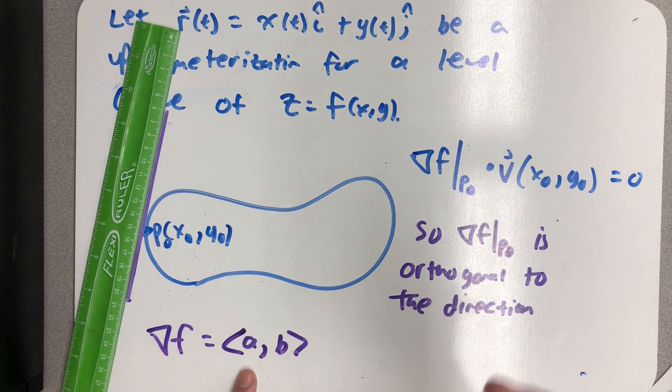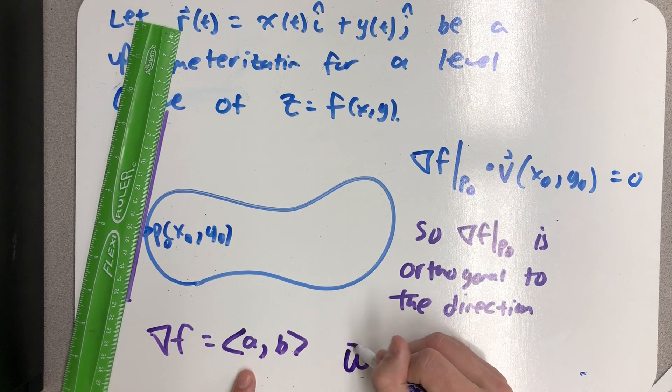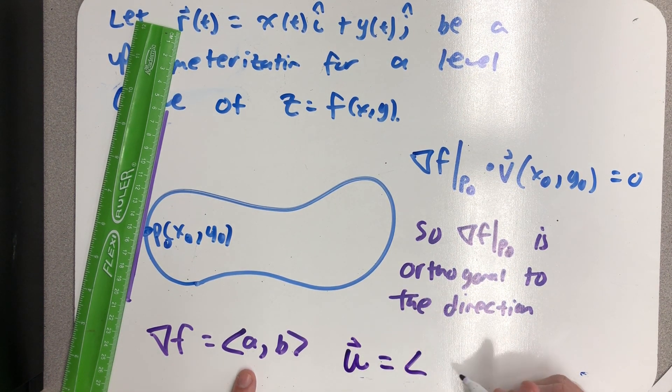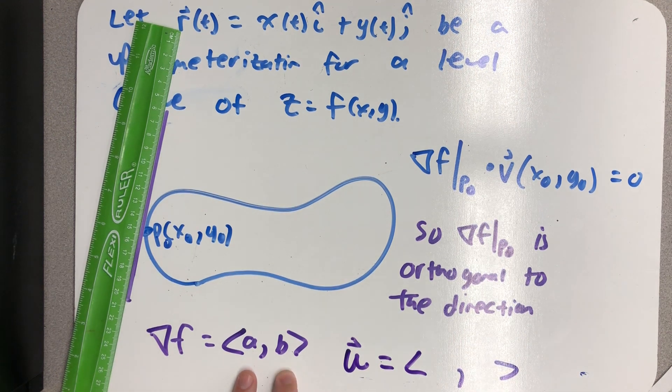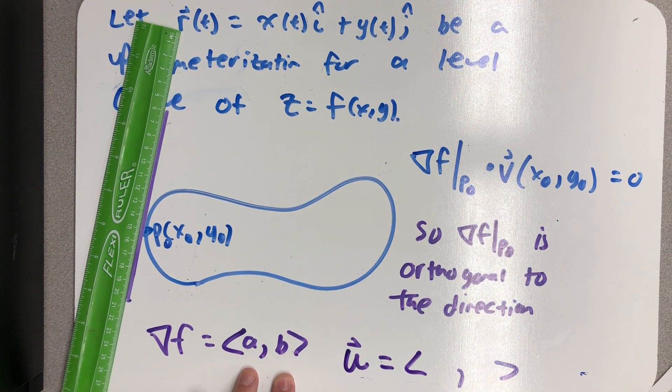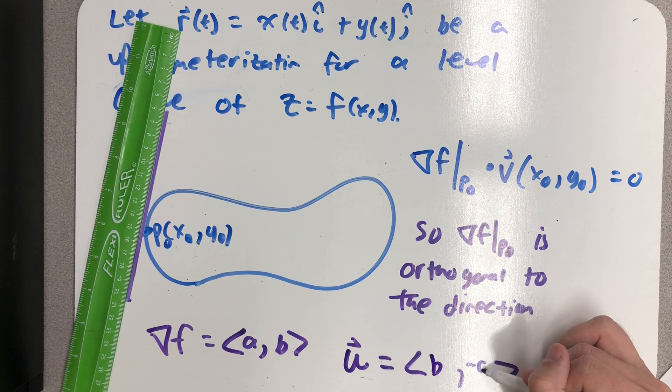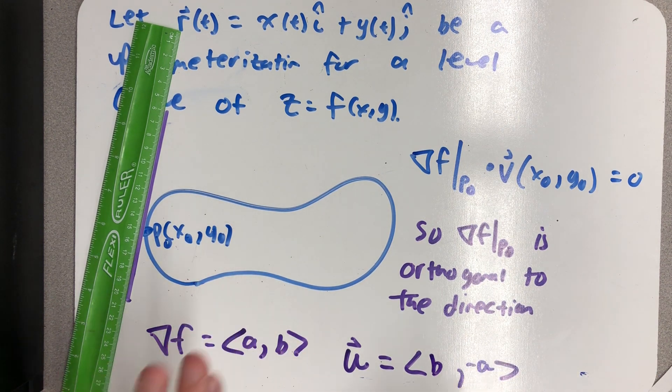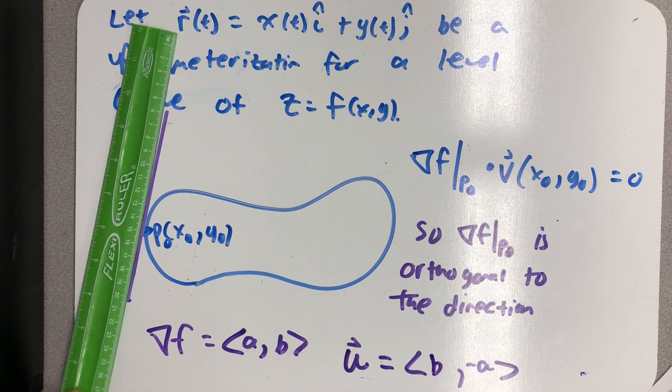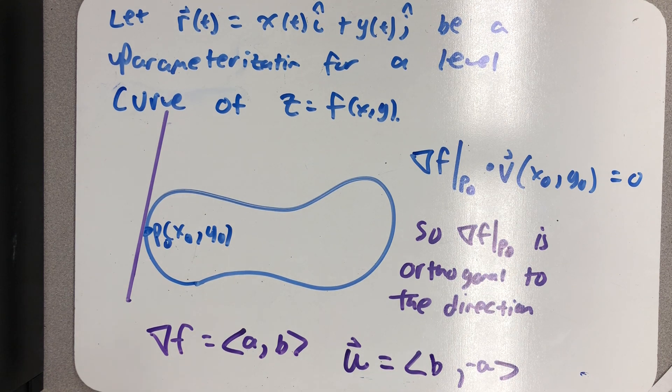Pause the video and see if you can come up with a vector that I'm going to call u, that is orthogonal to this vector. I hope what you decided was that you could just switch the components and make one of them the opposite, and it could be either one. Here I've chosen to make it a really for no reason whatsoever.